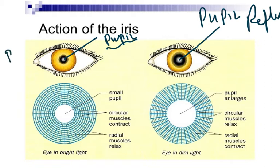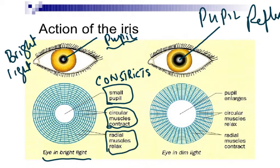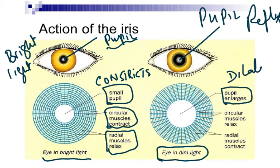When somebody shines a bright light in your eye, the pupil constricts — note: constricts, not contracts (contracts is only for muscles). The circular muscles contract, like a rubber band becoming a smaller circle, while the radial muscles relax. In dim light, the pupil dilates — enlarges to a larger diameter — the circular muscles relax and the radial muscles contract.